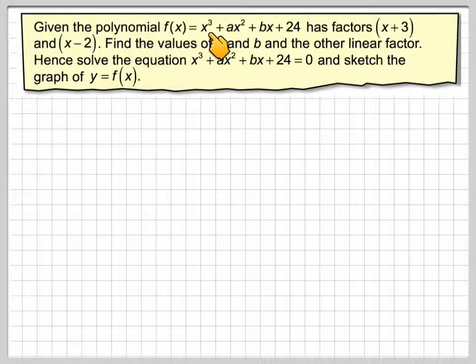Given the polynomial f(x) = x³ + ax² + bx + 24 has factors (x + 3) and (x - 2), find the values of a and b and the other linear factor.